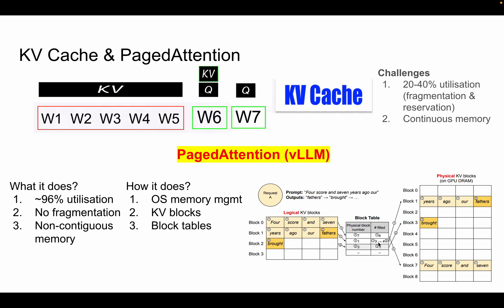As the LLM generates new tokens — for example 'fathers' — it fills into the available block, updating the count from three filled to four filled. PagedAttention's paper also explains how batching works and other details, but the core idea is what we've discussed here.